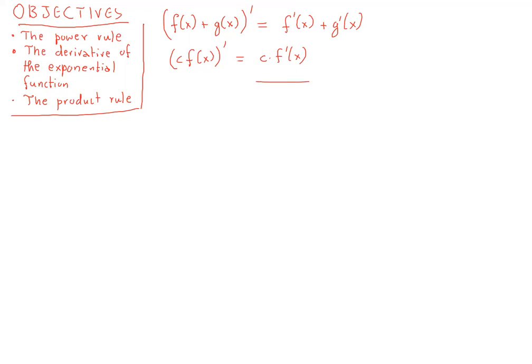The next rule we're going to see is the power rule, which pretty much generalizes what we had seen about monomials. The derivative of x to the a is the same form no matter what a is — the exponent comes in front and the power is reduced by one on the exponent. For polynomials, this is something we have already seen, so the derivative of x to the fourth is 4x cubed.